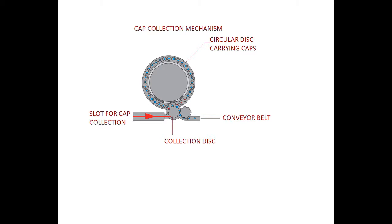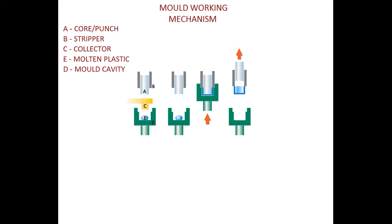Further we have cap collection mechanism. Cap collection mechanism consists of a circular disc which carries the cap, then there is a connection disc which is smaller inside and has just placed beside the big circular disc. This small connection disc carries the cap from the big disc and places it on the conveyor belt.